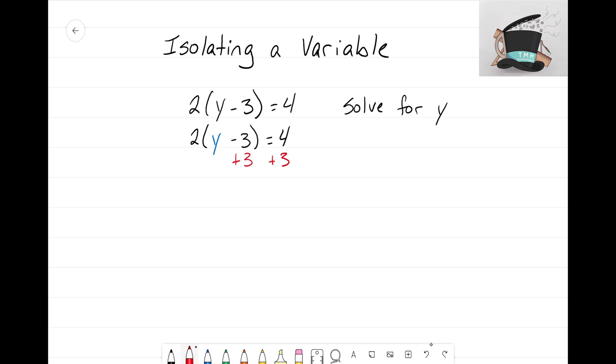Instead we need to divide both sides by 2 so that we can get rid of this 2 in the front and by doing that those 2s cancel to a 1.